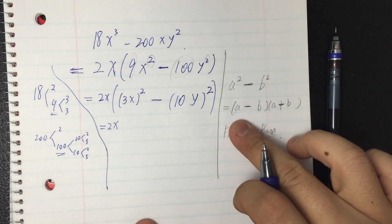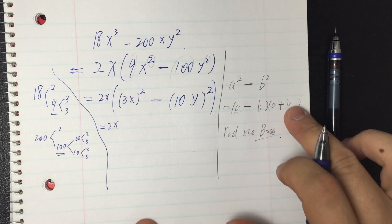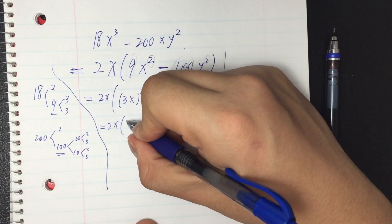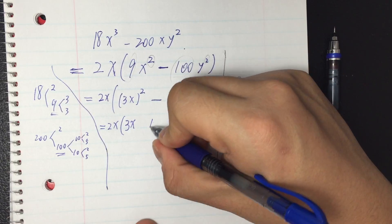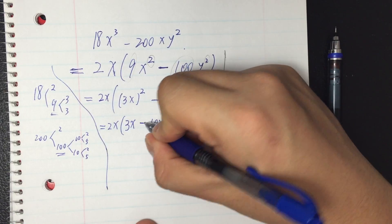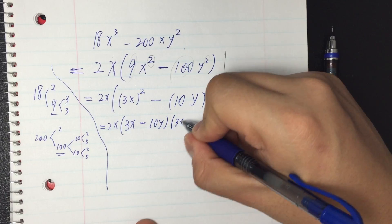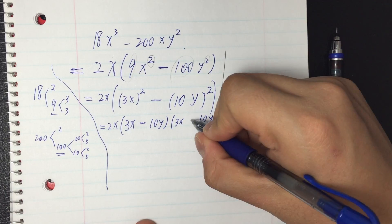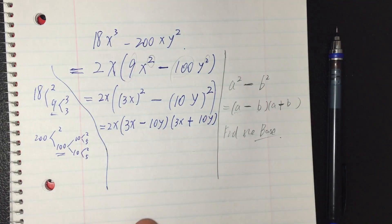All right, now I'm finding the bases are 3x and 10y. So I just follow the form, the difference of the bases, the sum of the bases. 3x and 10y, I take difference, and the other one I take the sum.